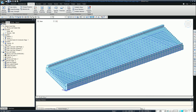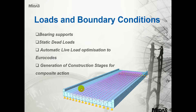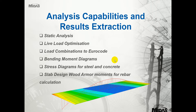Going back to the presentation and onto the analysis capabilities. First of all we're going to do some static analysis, then move on to the live load optimisation, focusing on the worst case for different elements. Then we're going to look at the load combinations which are automatically generated to the Eurocode. Then we'll look at bending moment diagrams, stress diagrams for steel and concrete - we can separate those - and the slab design Wood Armer moments for all the rebar calculations.